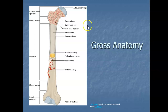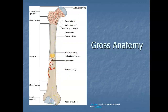Here's a picture of the structure of a long bone. We're going to look at the gross anatomy — the things we can actually see if we looked at a bone. A long bone has two parts: the diaphysis and the epiphysis.